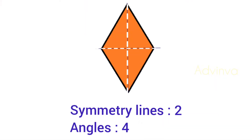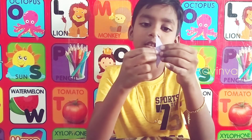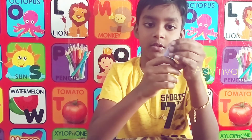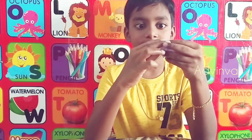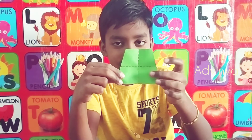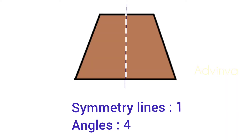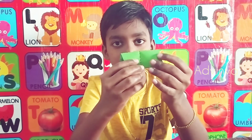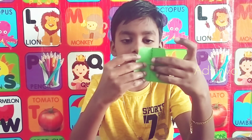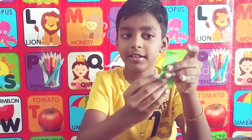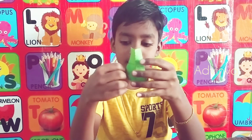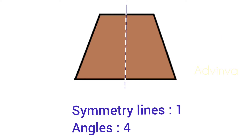Now I have a diamond here, and it has two symmetry lines. You can do it like this, and we can do it like this, and even like this. And the heart has one symmetry line — you can see a little cut here, and it has just one line.